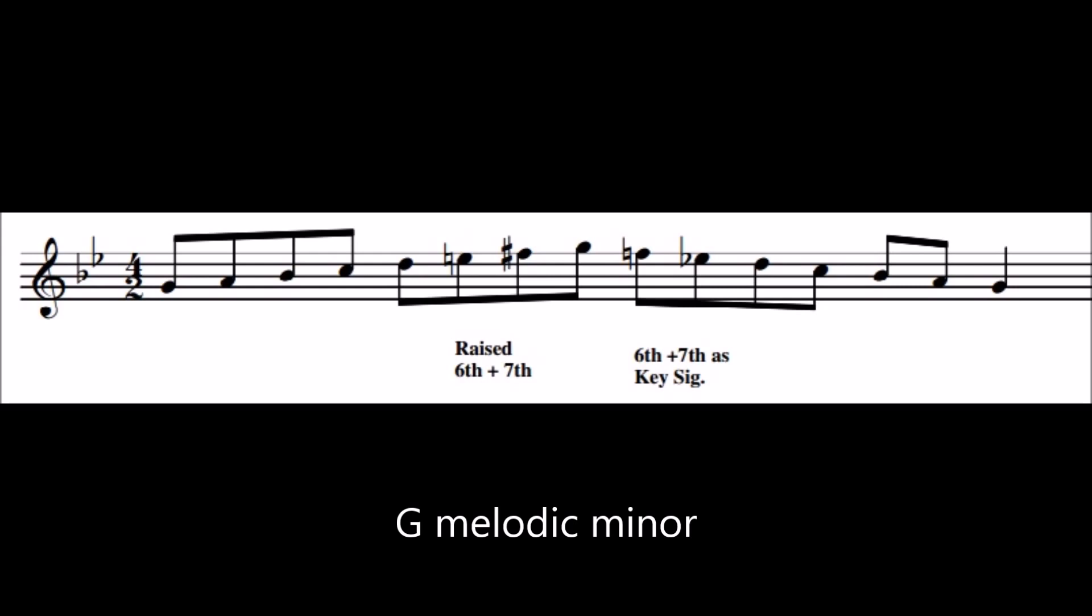Consider this scale of G minor. On the way up, the sixth and seventh notes, which are normally E-flat and F, are raised to E-natural and F-sharp. But on the way down, they revert back to the key signature, E-flat and F.